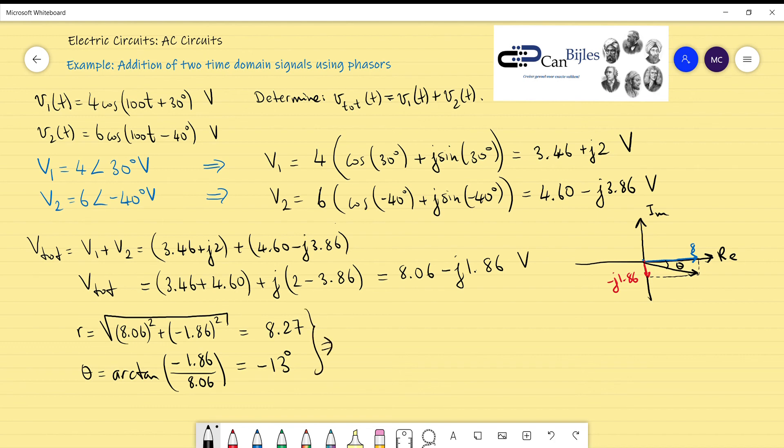If you place this in the phasor notation, V_tot is equal to 8.26 phase minus 30 degrees volts.